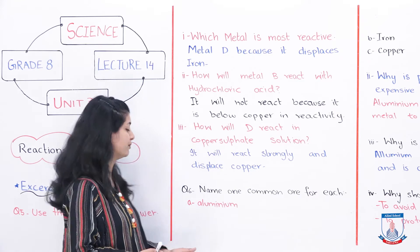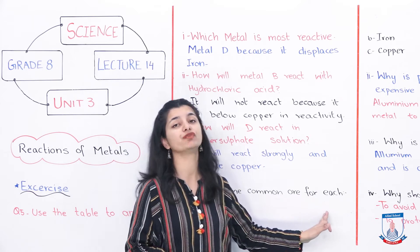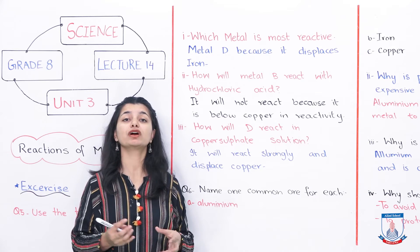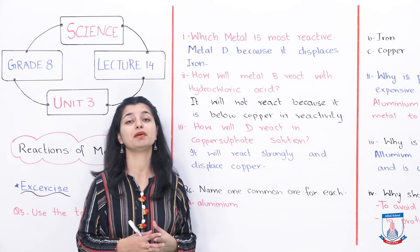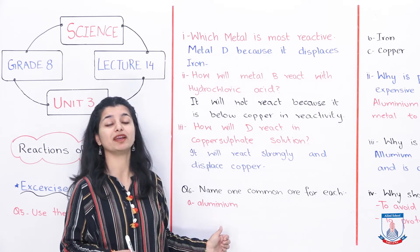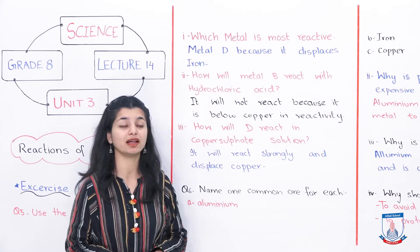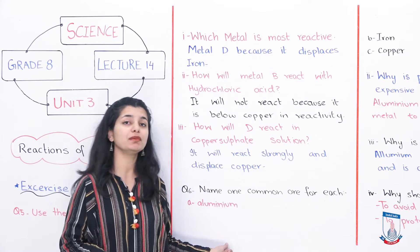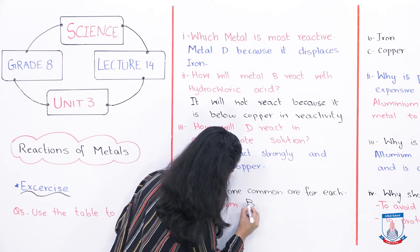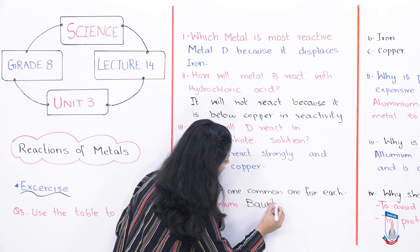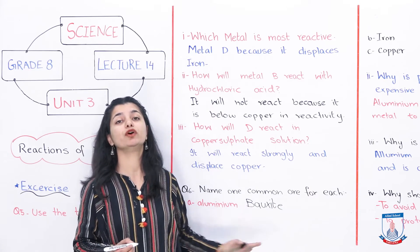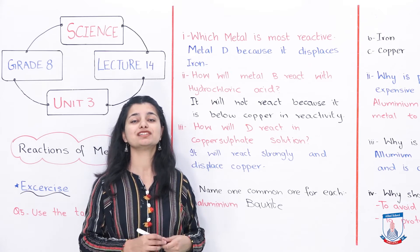Question number 6 asks you to name one common ore for each metal. Ores are compounds found in rocks from which we extract metals. You have to name the common ore for three metals. For aluminum, the ore is bauxite — aluminum is extracted from bauxite. For iron, the ore is hematite. And for copper, the ore is copper pyrites. So: copper pyrites is the ore for copper, hematite is the ore for iron, and bauxite is the ore for aluminum.